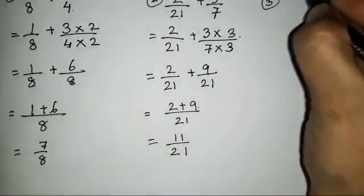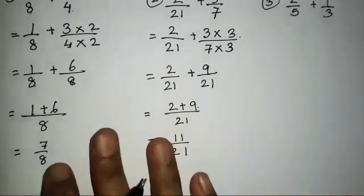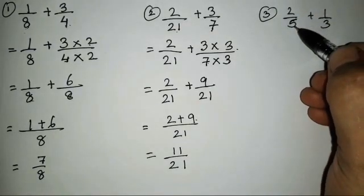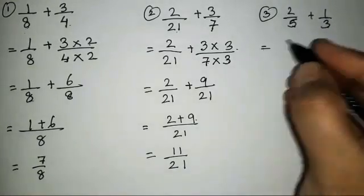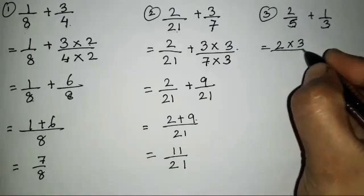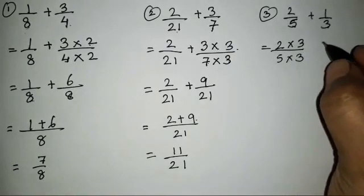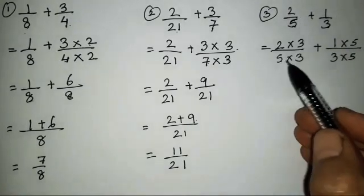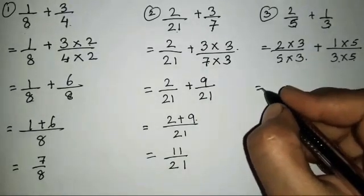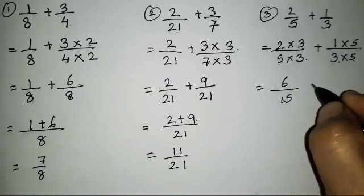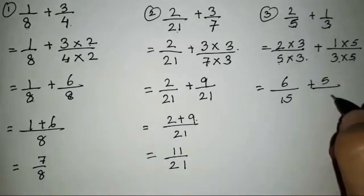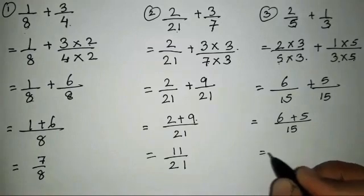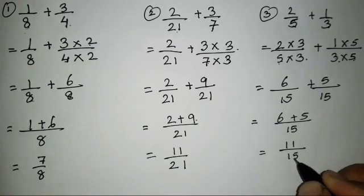The third sum is 2/5 plus 1/3. Both denominators are different. We multiply 5 by 3 and 3 by 5 to get a common denominator of 15. So 2×3 = 6 over 15, plus 1×5 = 5 over 15. Then 6 plus 5 gives us 11/15.